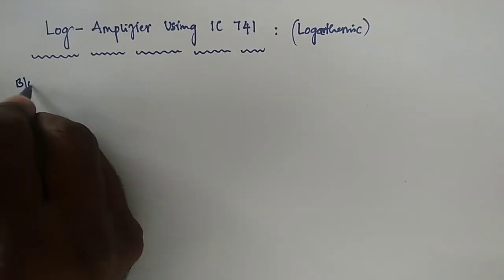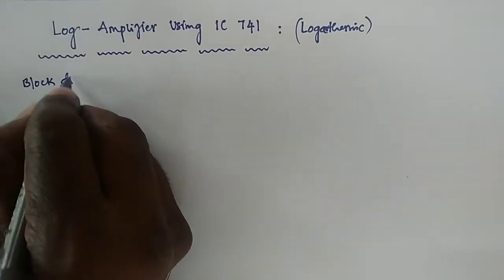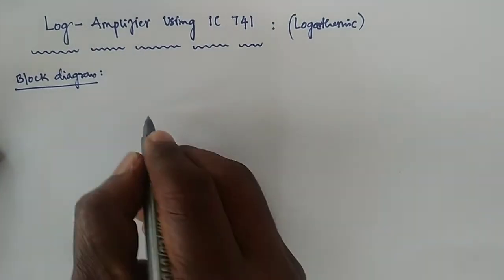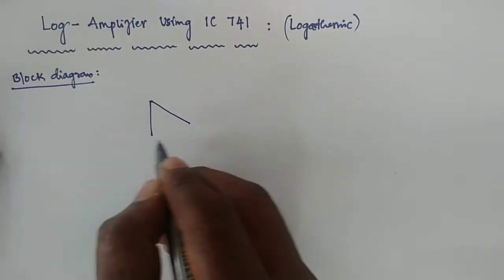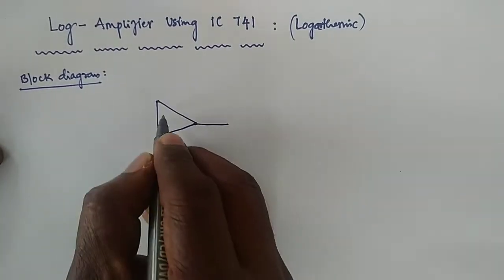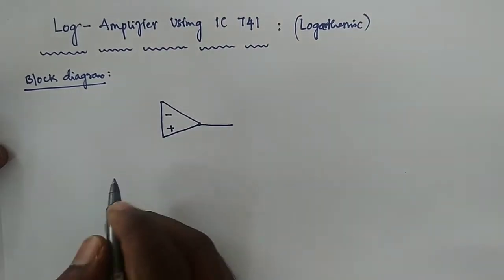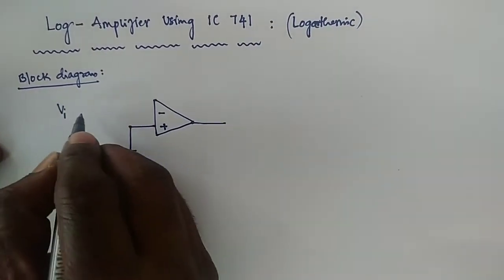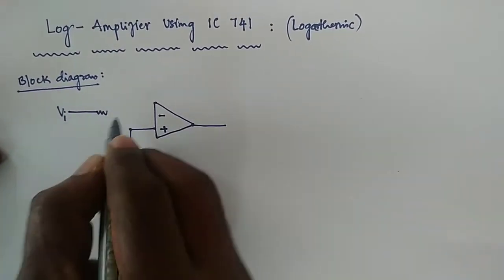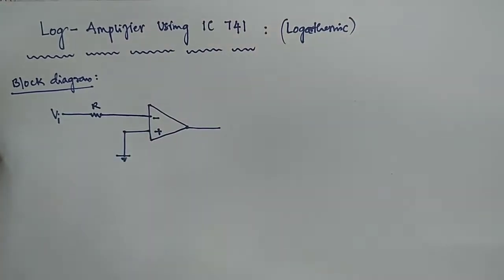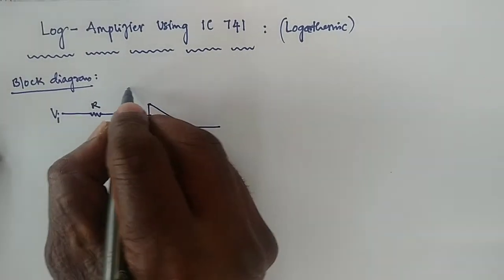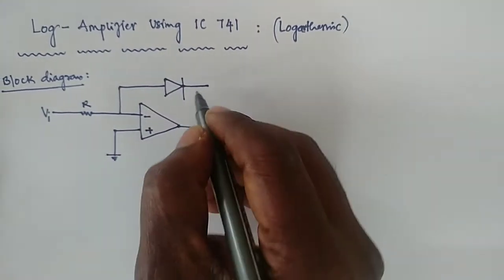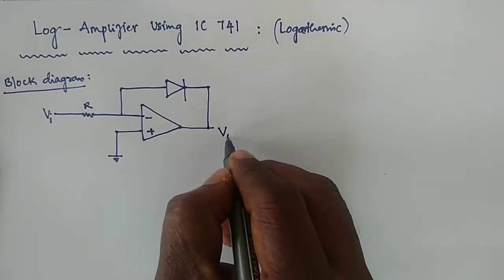The basic block diagram of the logarithmic amplifier uses IC741. It has a negative terminal and a positive terminal; the positive terminal is connected to ground. The input voltage VA is connected to the negative terminal through a resistor of value R. The feedback element is a diode, connected from output to input.